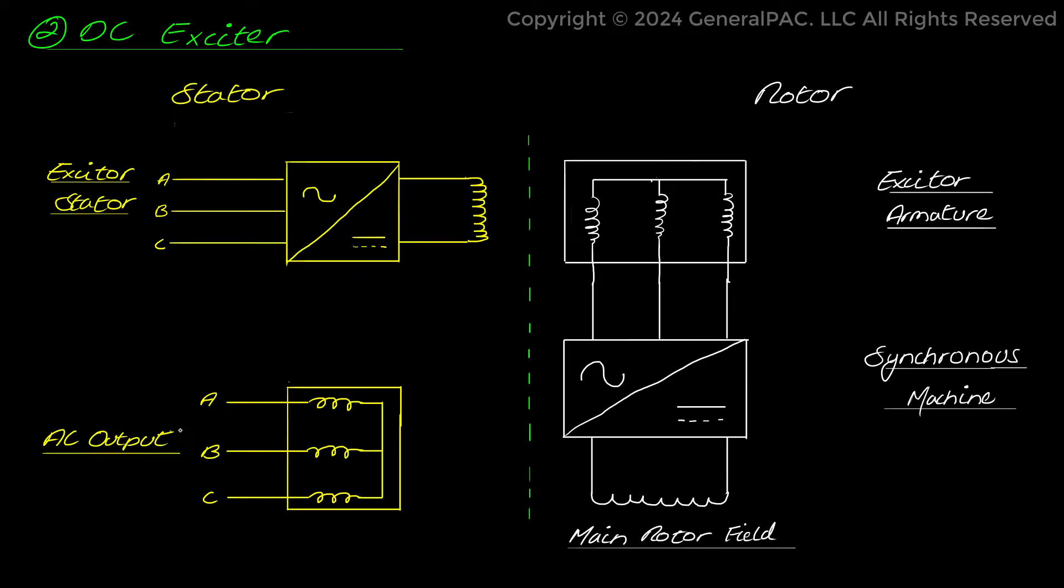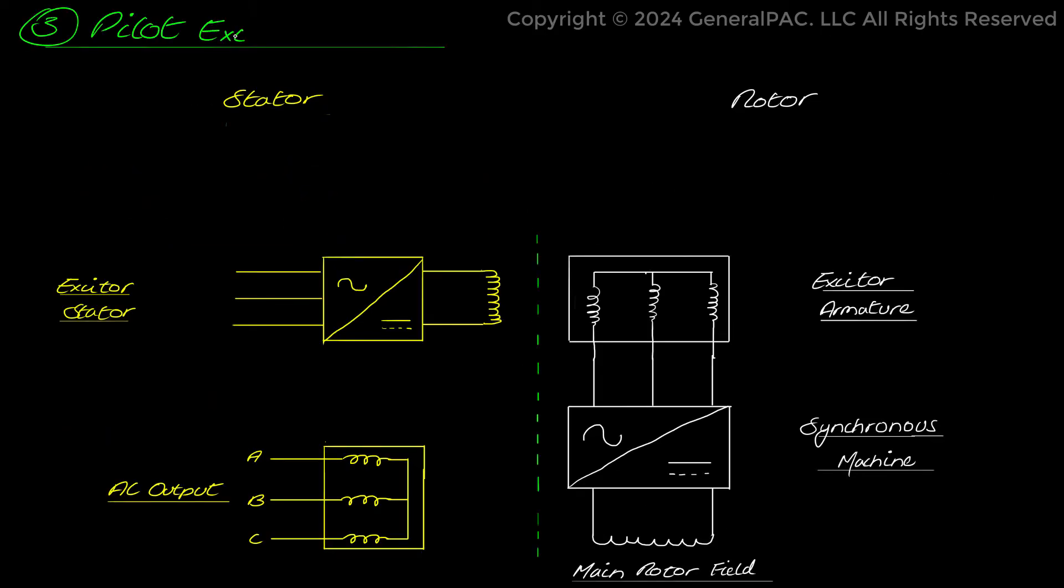Moreover, in order to make excitation circuit of synchronous generator completely independent of any external source, a pilot exciter is used. Pilot exciter is also another AC generator with permanent magnet mounted on rotor shaft. This magnet generates magnetic field in the rotor's field windings of pilot exciter.